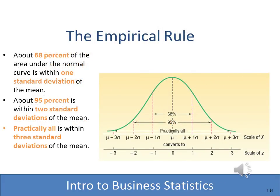You read briefly about the empirical rule in a previous chapter, so let's review what it tells us. Within plus or minus one standard deviation of the mean, we find 68% of all values. Within plus or minus two standard deviations, we find 95%. And within three standard deviations, we find practically all values — approximately 99.7%.